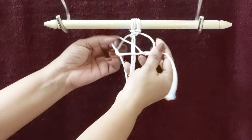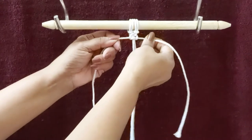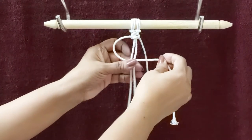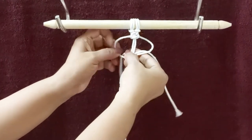Now take the first string and repeat the knot. When you keep repeating with the first string, the knots twist into a spiral shape.